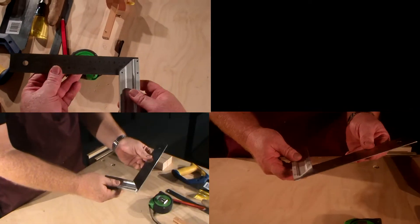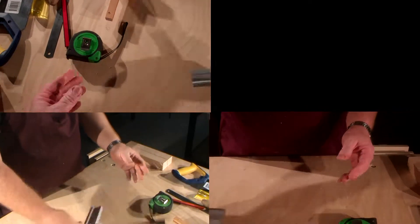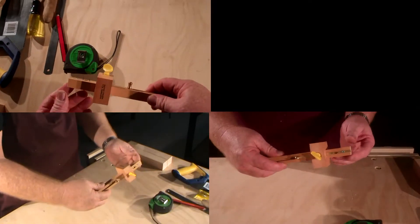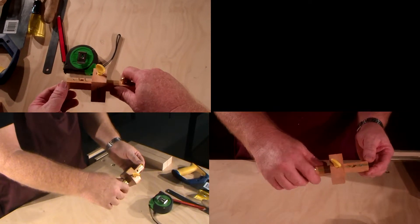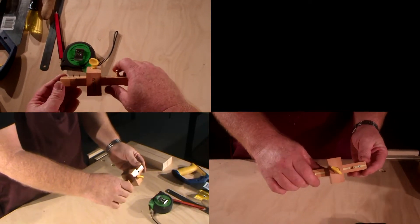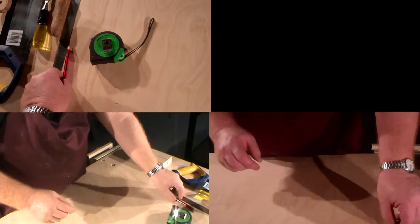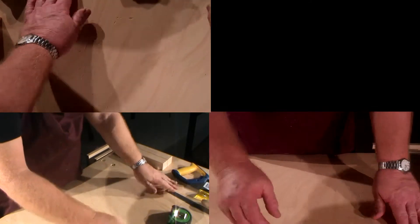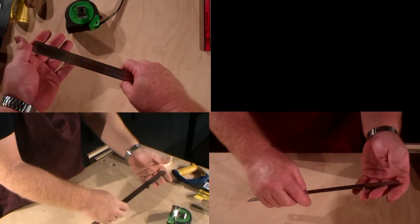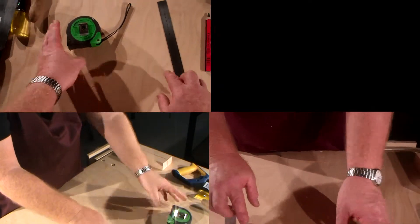The tools we need for marking out are a tri-square, the marking gauge which I've set to the width of my chisel, that's the mortise gauge I should say, a carpenter's pencil nice and sharp, a rule, and our tape measure.